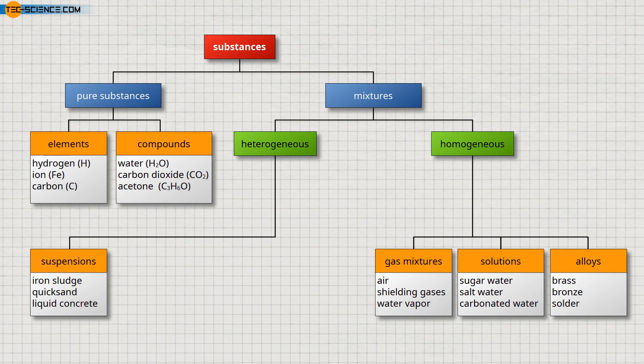Heterogeneous mixtures of different liquids that cannot be mixed homogeneously are called emulsions. A mixture of oil and water, for example, forms such an emulsion. In the food sector, milk or mayonnaise are examples of such emulsions.